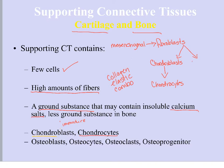For bone, fibroblasts will differentiate first into osteoprogenitor cells. Osteoprogenitor cells then differentiate into osteoblasts, and osteoblasts differentiate into osteocytes. So the types of cells present really depends on how mature the tissue is itself.